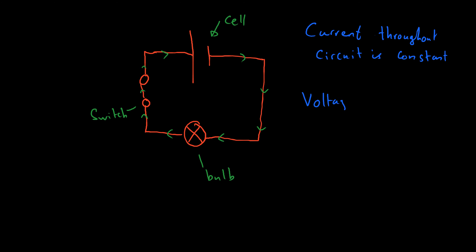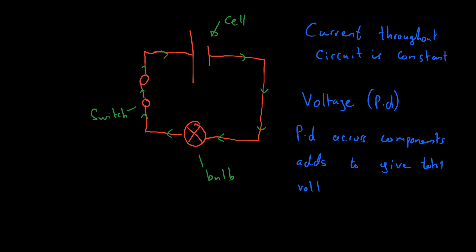The voltage — or I'm going to put in brackets here the potential difference, because that's more correct across a component — the voltage is normally what you talk about coming from the power supply. So the voltage that comes from the power supply is shared between the components, which means that the potential difference across each component adds up to give the total voltage.